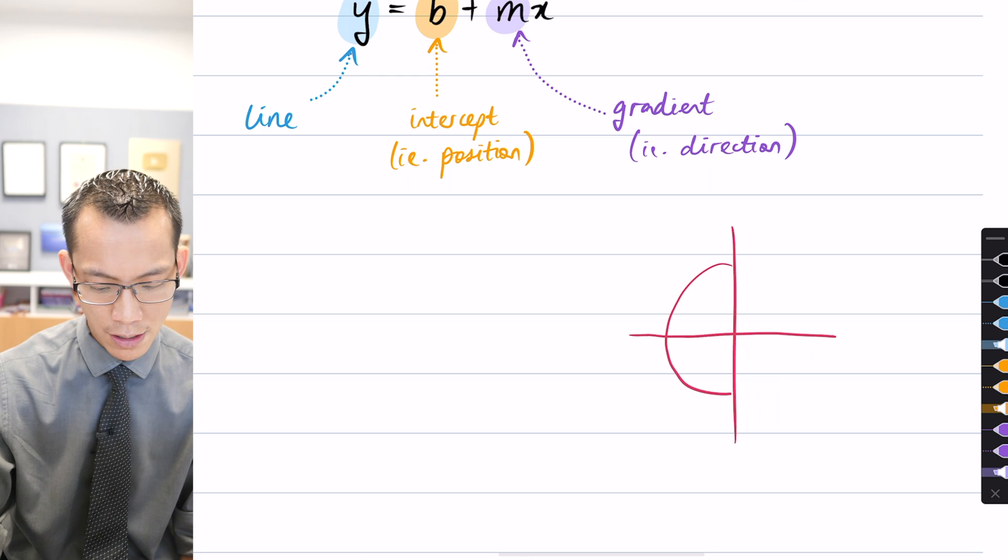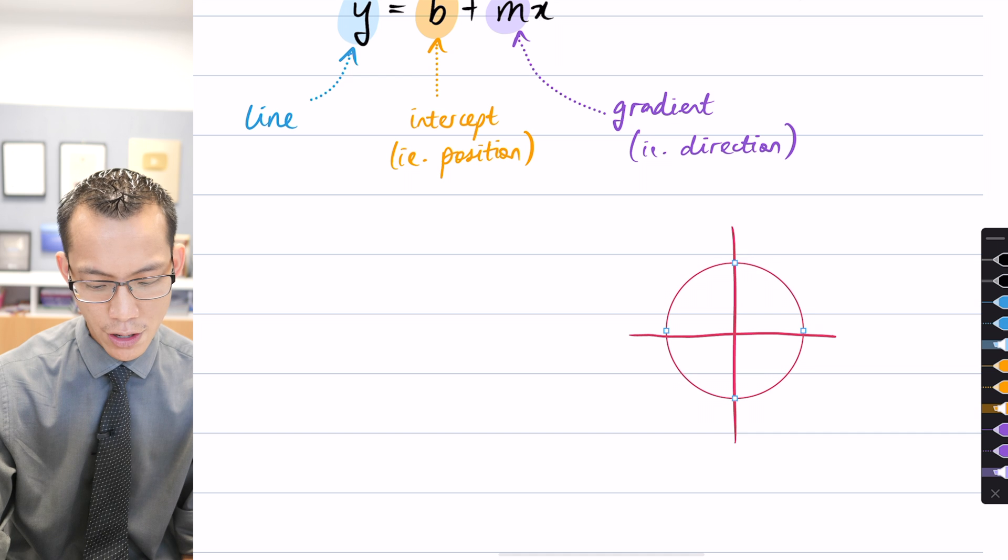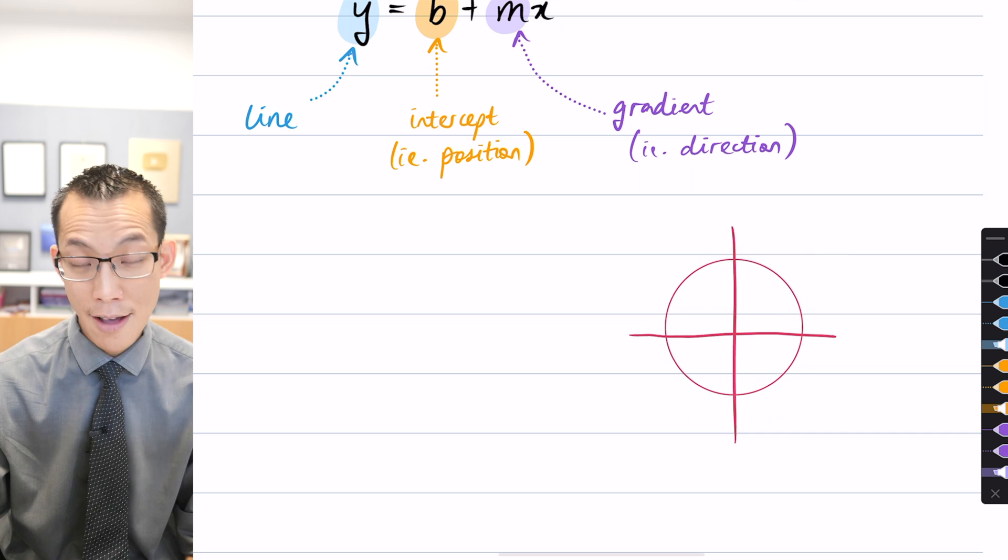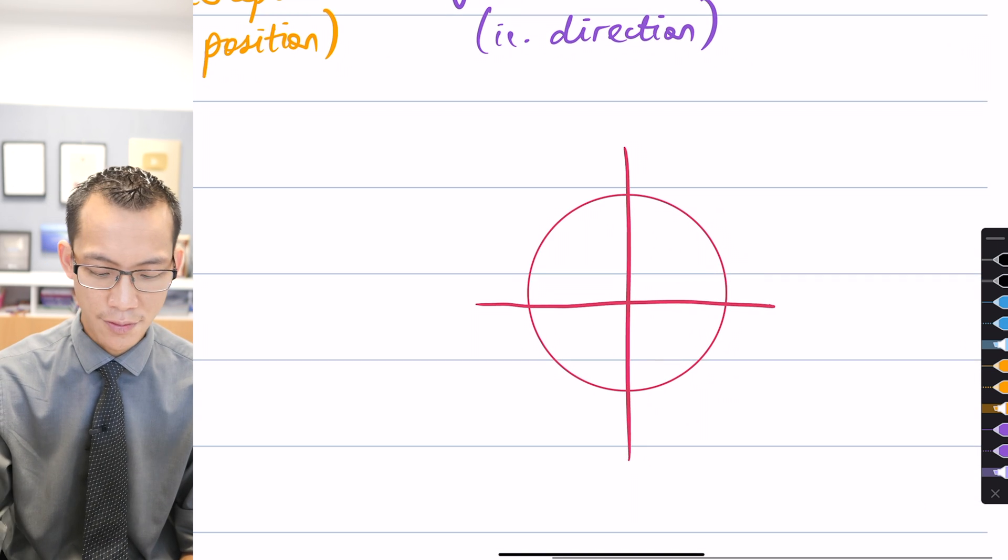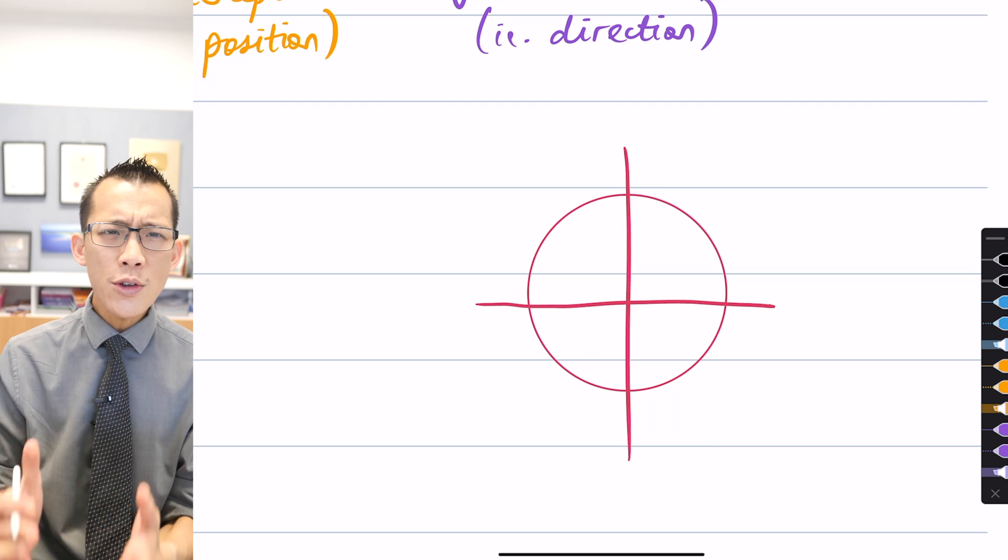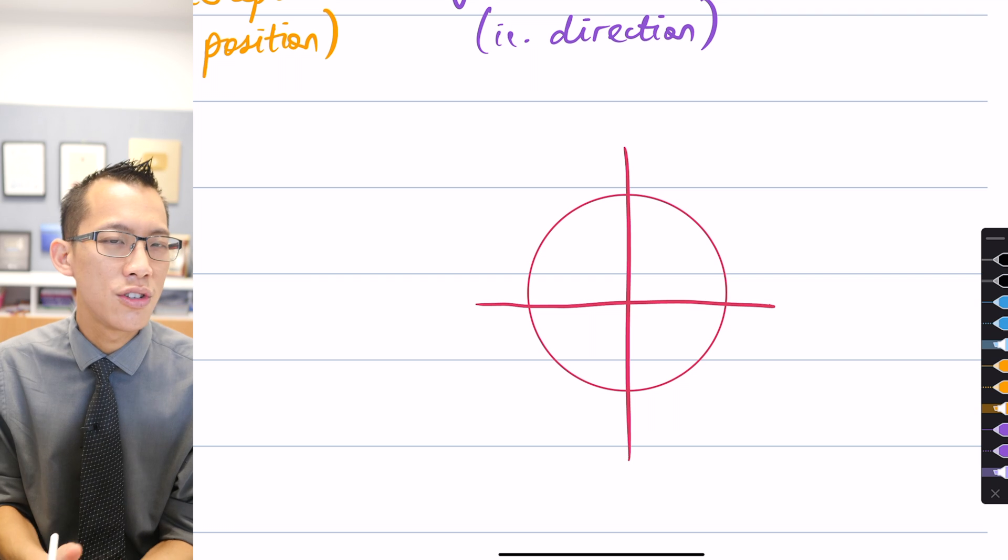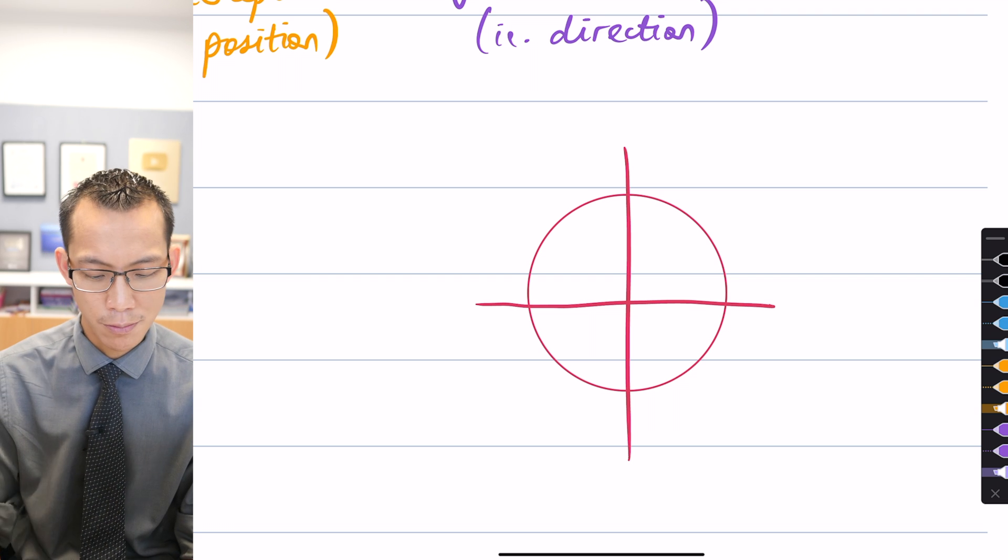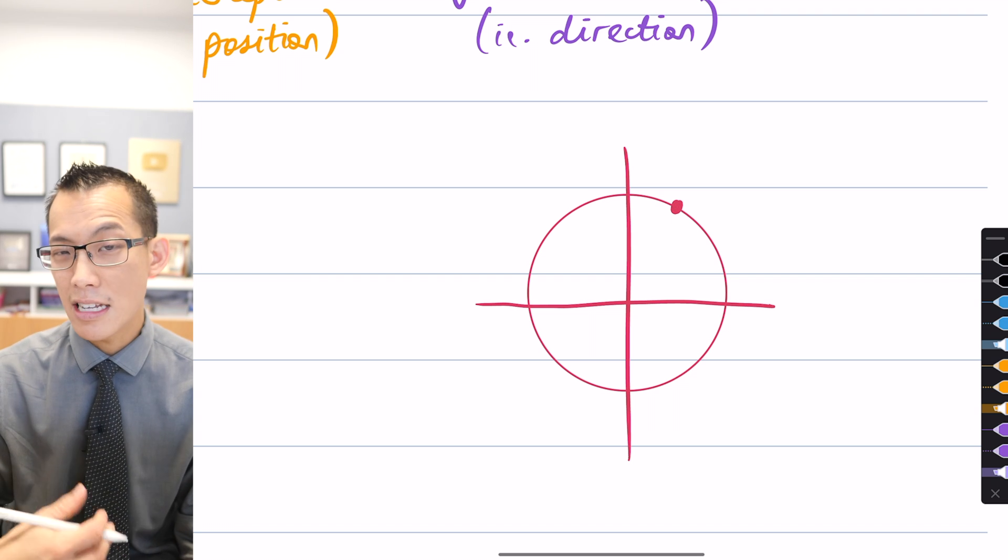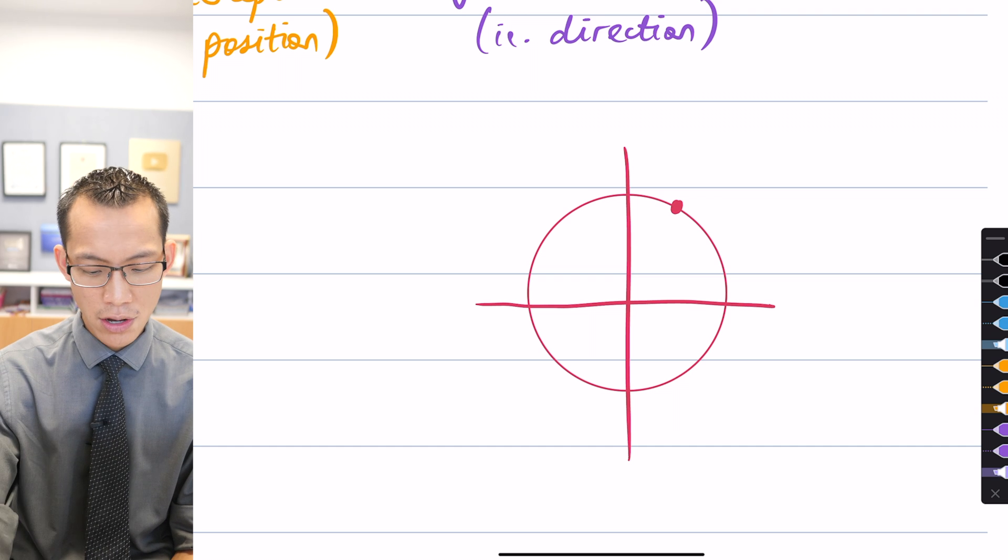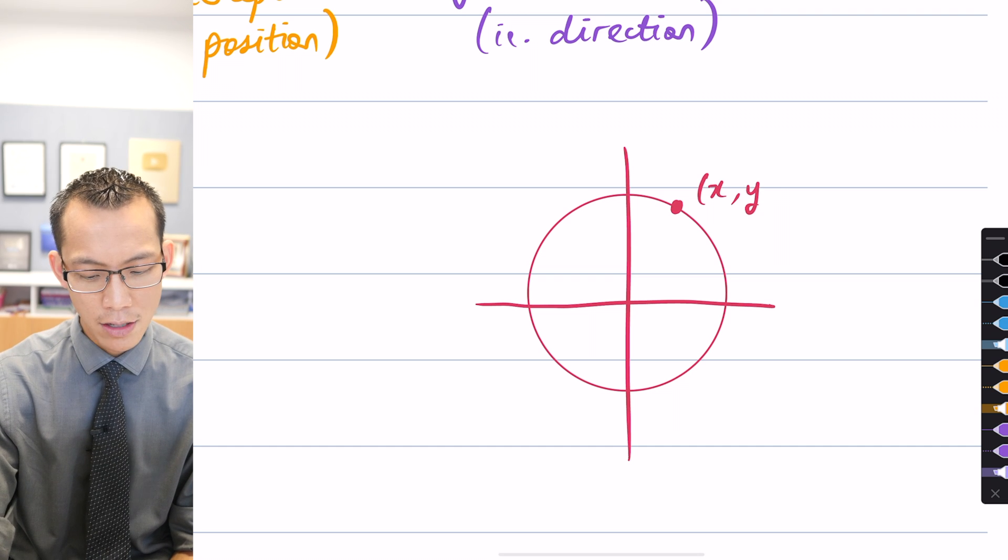I didn't talk about this last time, but I want to review it—it's a very important connection to make. You don't have to draw this, but I find it helpful. When you think about any circle, I'm just going to use the unit circle as a simplified example.